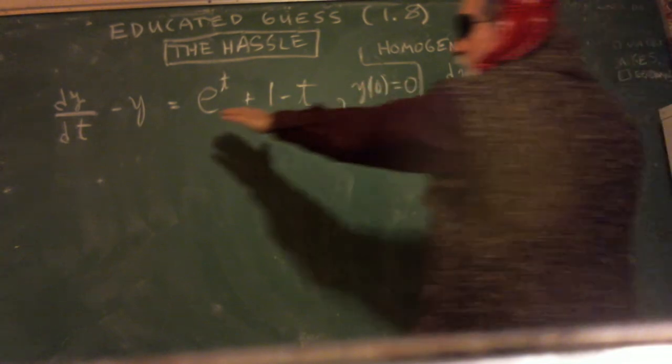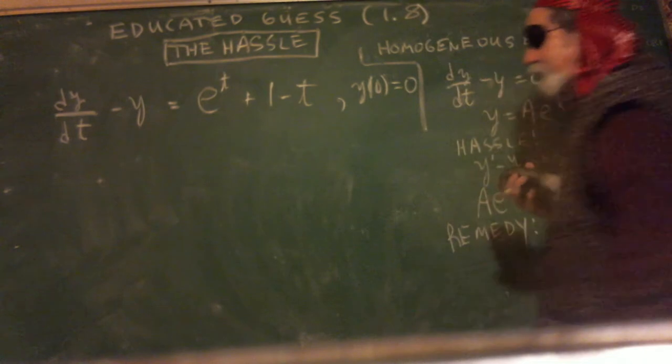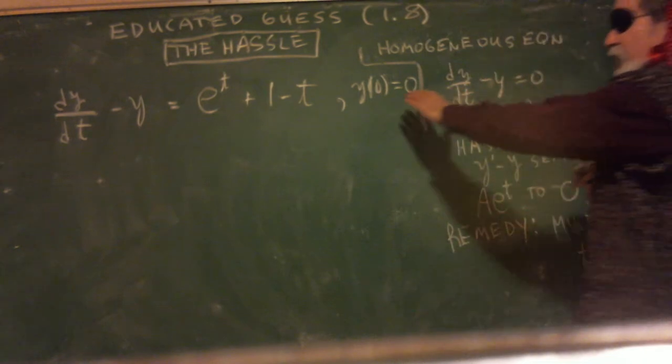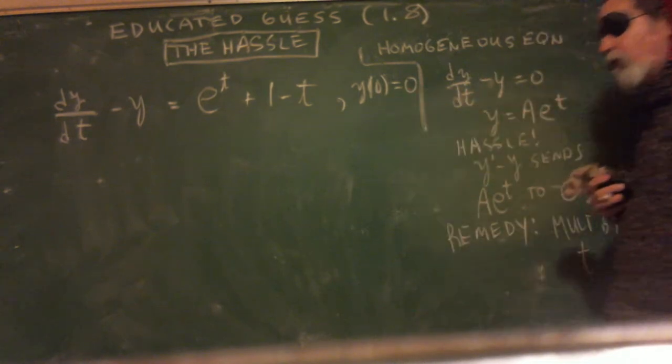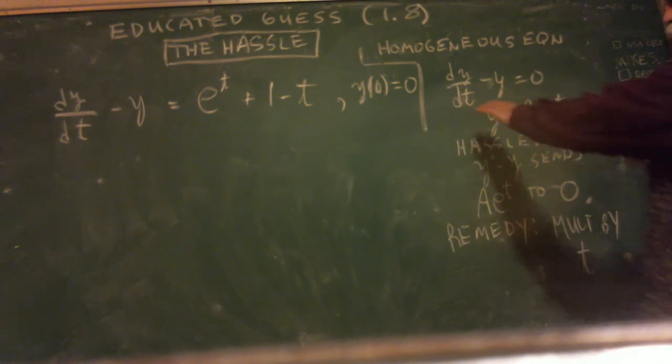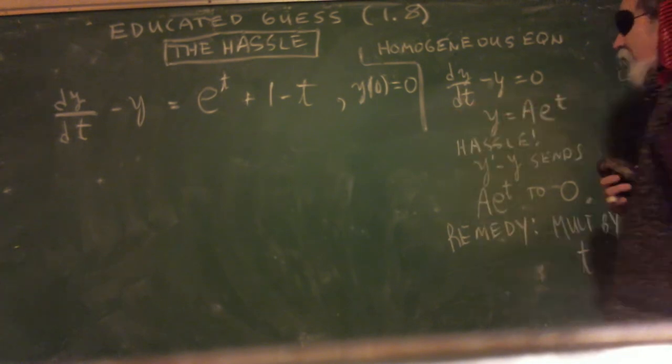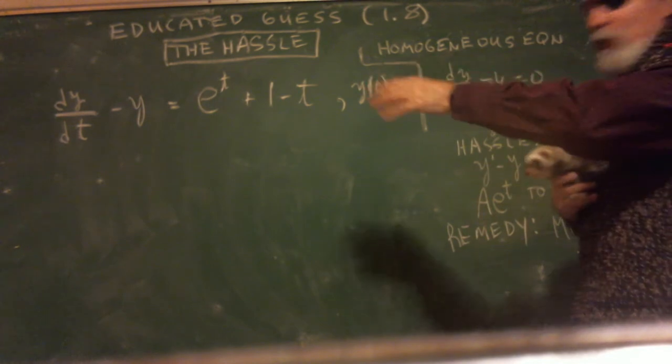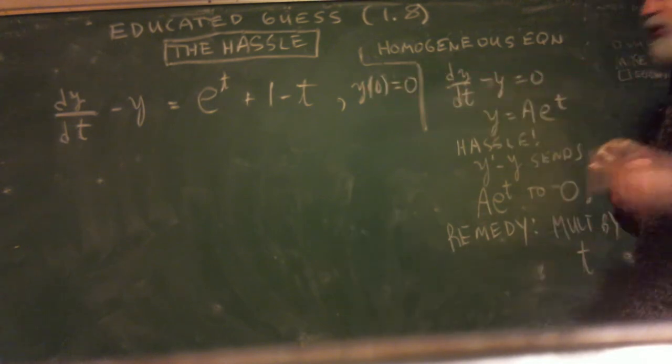So, new differential equation. Read it for yourself. I've got an initial condition. Now, when I go to do the homogeneous solution, which is right here where I did it the last time, the homogeneous solution is the same one, y equals ae^t. And here's the problem.